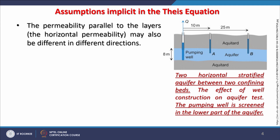On the right figure, we have two horizontally stratified aquifers between two confining beds — a confined aquifer situation. There is a pumping well shown with Q and two observation wells A and B. The distance from the pumping well to observation well A is 10 meters, and to observation well B is 25 meters. The thickness of this confined aquifer is given as 8 meters. One important thing to notice is that the well is penetrating throughout the width of the aquifer.